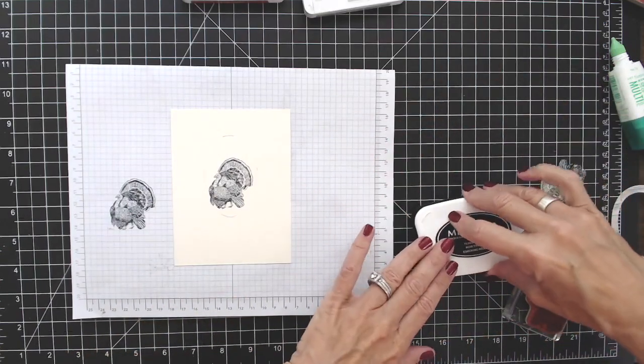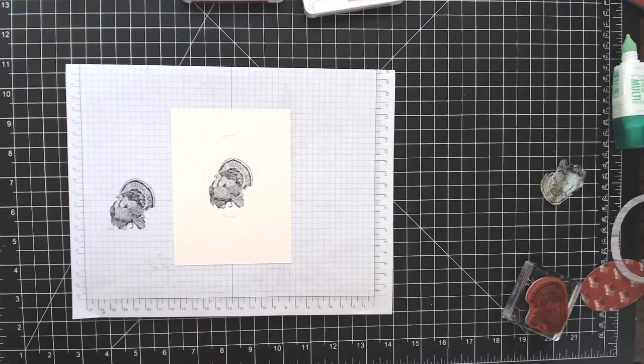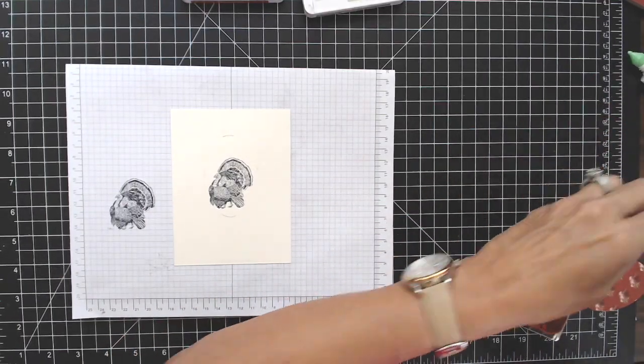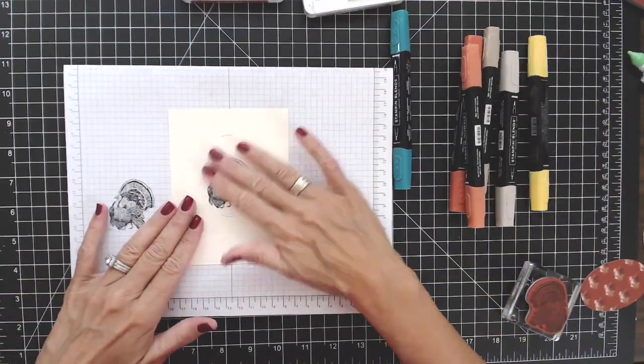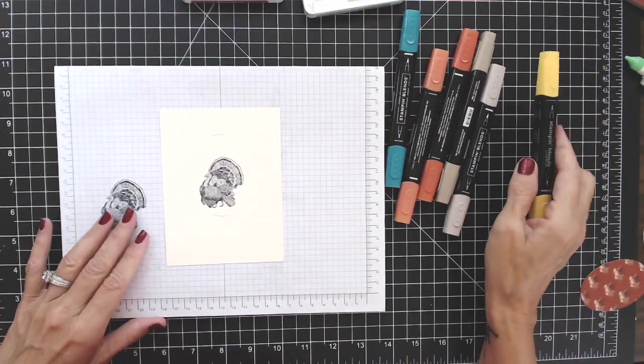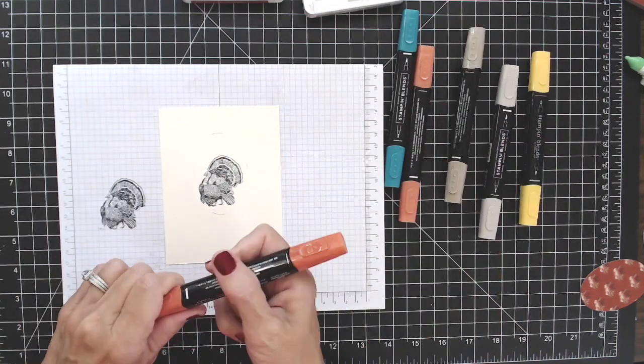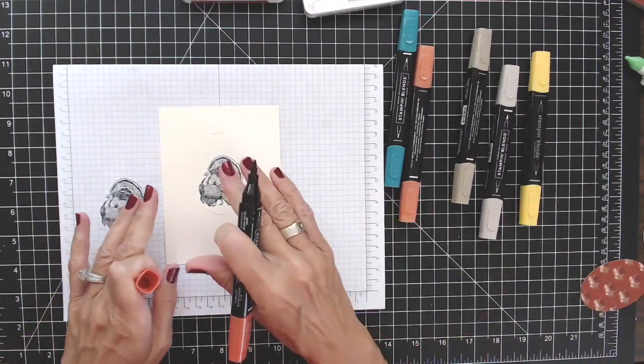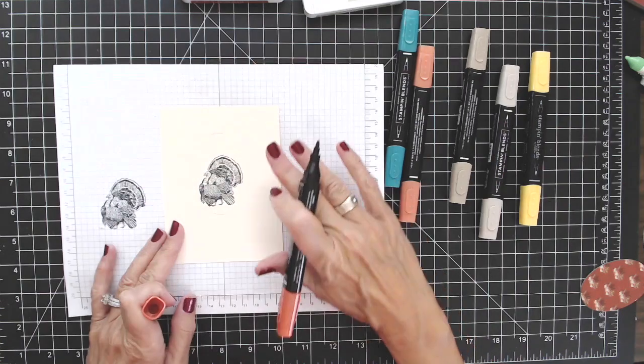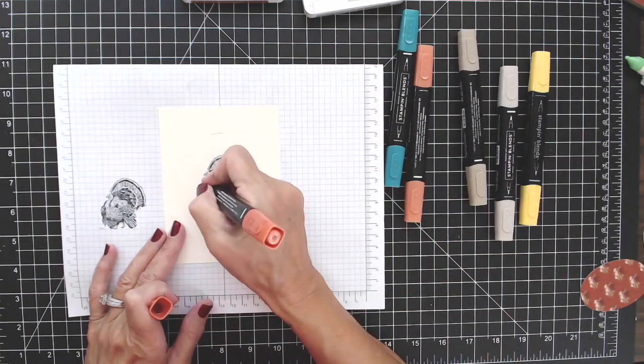All right, and then I'm going to go ahead and I'm going to color him and I'll tell you what I'm doing as I'm doing it. I actually colored it this way on my last video, so I'm going to go ahead and put in some of the darker colors and I'm going to add different colors and then I'll blend it all together with my crumb cake. All right, so here we go.